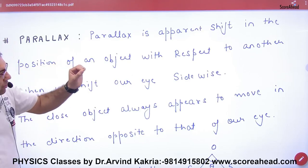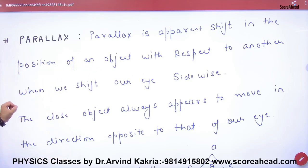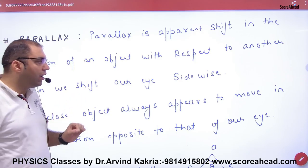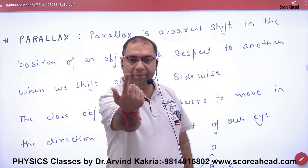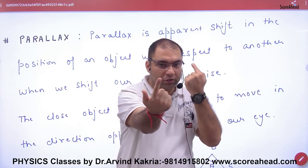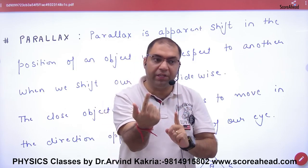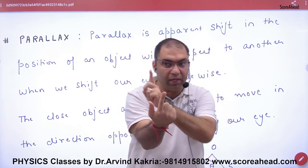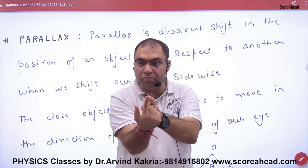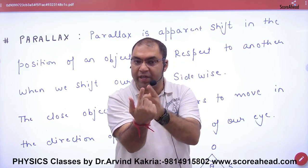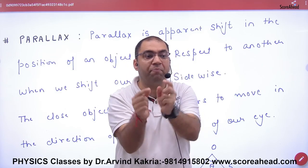Parallax is the apparent shift in the position of an object with respect to another when we shift our eye sideways. In a simple way, this is a finger. My left eye sees it from here and right eye sees it from here. Left eye will see it from here and right will see it from here, such as left eye and right eye. This is called the parallax angle.